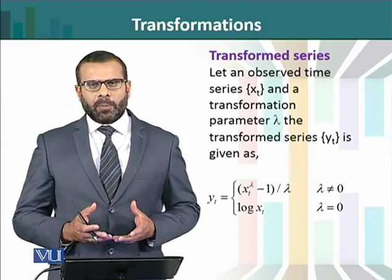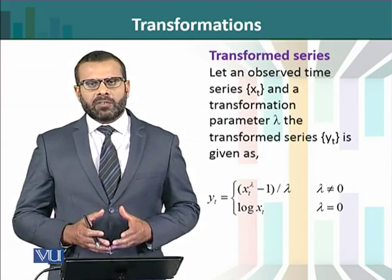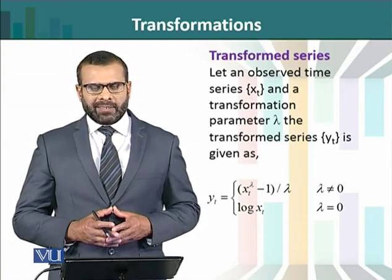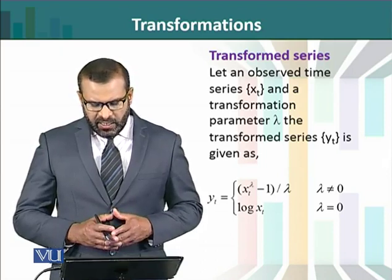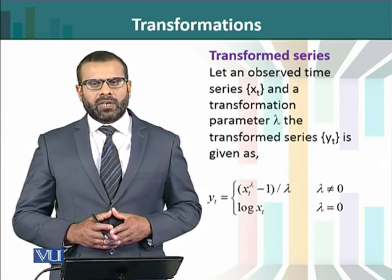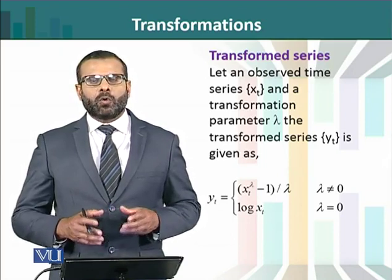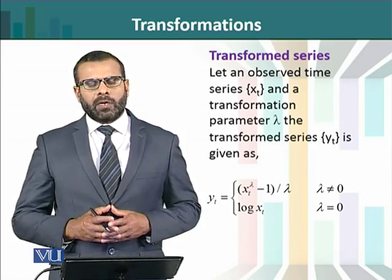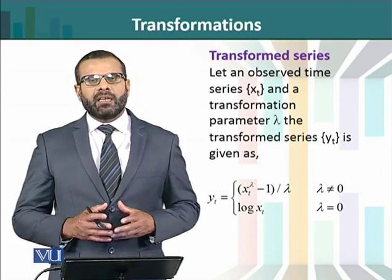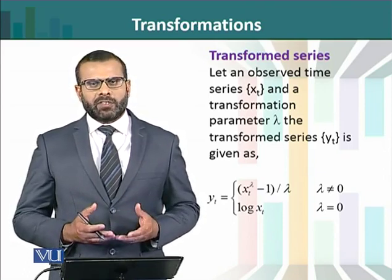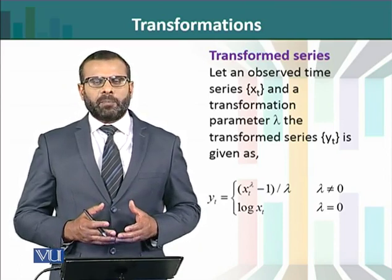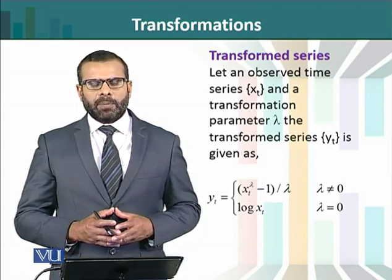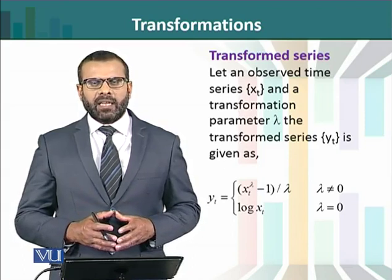Logarithmic transformation is very popular — it can stabilize the variance and make the data normally distributed. We also have the Box-Cox transformation, in which we can choose the appropriate value and transform the series so the resulting series is normally distributed. Our first attempt will be to plot the time series data, identify discrepancies, and apply appropriate transformations so that model building can proceed.